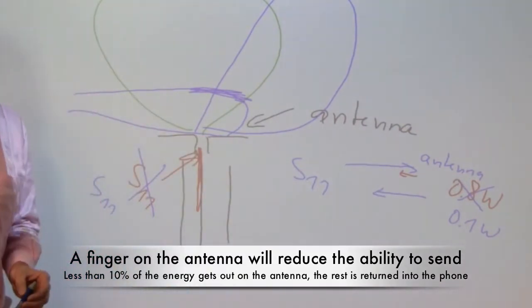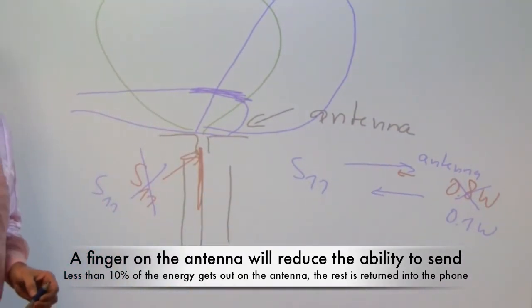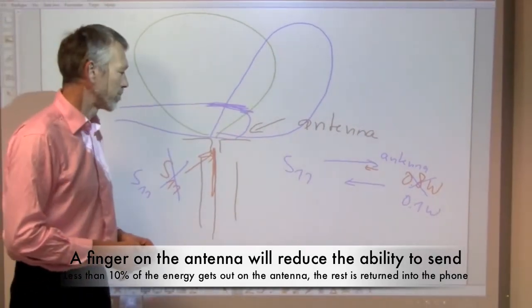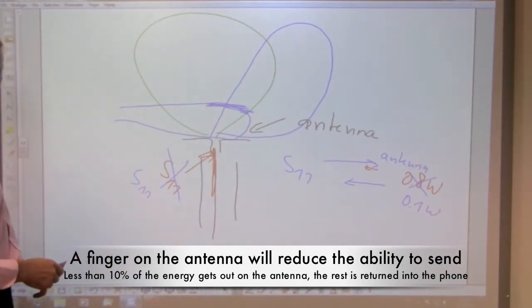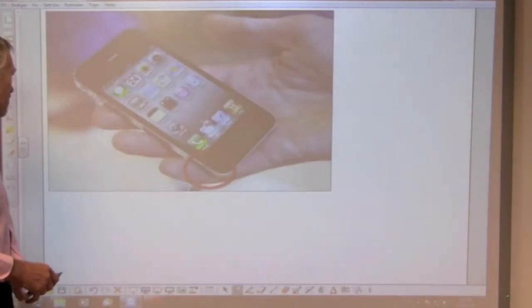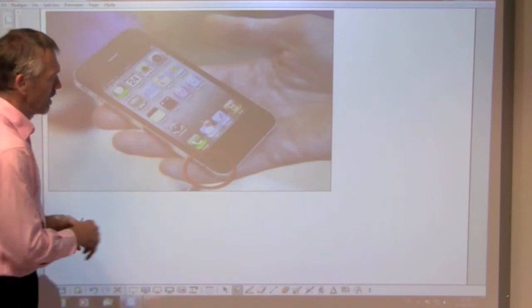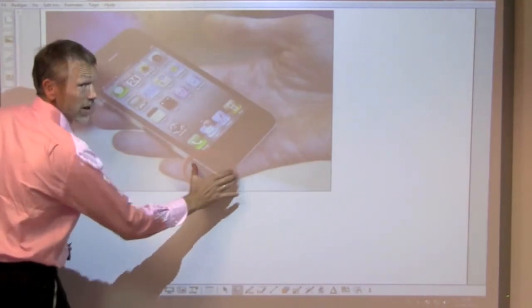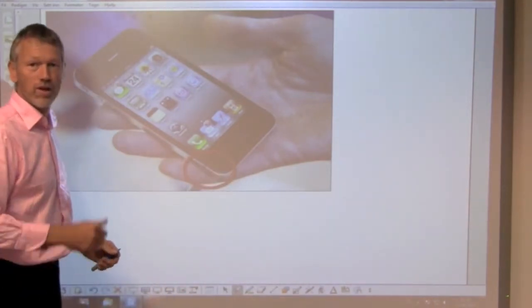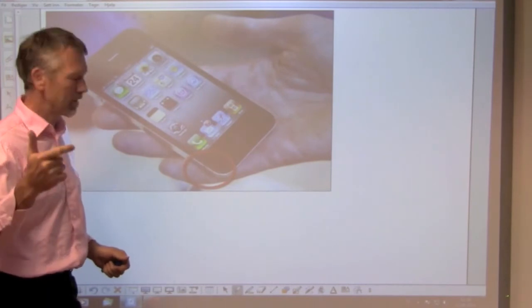So now let's see why is the bumper, why is this antenna case, the antenna bumper, why does it help us? Let's jump to the next slide. Let's assume this is our antenna, and if we put the finger in here, then we have exactly this problem of both input impedance and antenna gain.